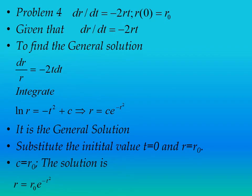The next problem is dr/dt = -2rt, with initial value r(0) = r₀. Separating the variables: dr/r = -2t·dt. Integrating gives ln|r| = -t² + c. Taking the exponential on both sides: r = c·e^(-t²), where c is another constant (e^c). This is the general solution. Substituting the initial value t = 0, r = r₀ gives c = r₀. So the particular solution is r = r₀·e^(-t²).